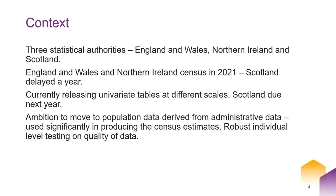There are three statistical authorities, so there are three censuses. Because of the pandemic, England and Wales and Northern Ireland stuck with 2021, but the Scottish census was delayed a year. That means the availability of information varies between the two. Northern Ireland released the first data, but their release pattern is slower. England and Wales have now nearly completed releasing all of the single variable tables, with the last one due this week, and the next stage is to release some multivariate tables.